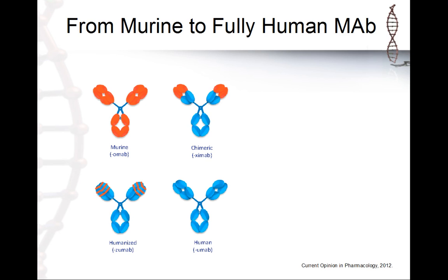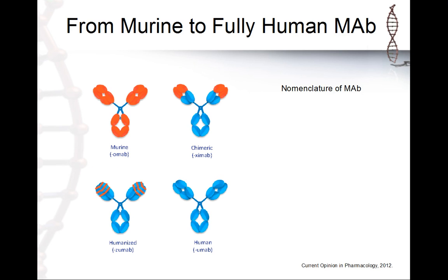Then we have humanized antibodies where the CDR parts — the parts where we have the interaction between the antibody and the epitope — are murine, and we have fully human antibodies. You can see the different percentages of murine versus human sequences. You can also see examples of drugs on the market. The nomenclature is: '-omab' for murine, '-ximab' for chimeric, '-zumab' for humanized.